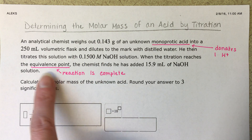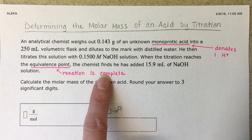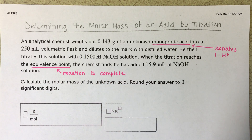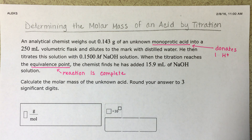When the titration is complete and has reached the equivalence point, the chemist finds that they have added 15.9 milliliters of the sodium hydroxide solution. The question asks: what is the molar mass of the unknown acid?